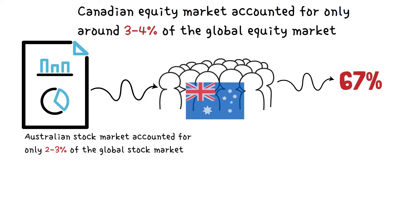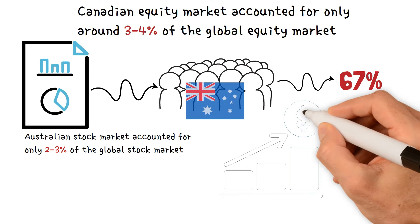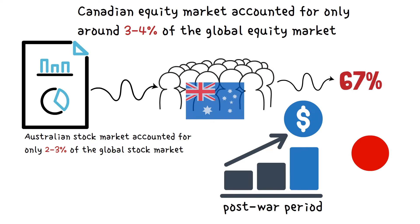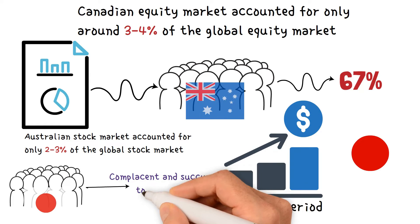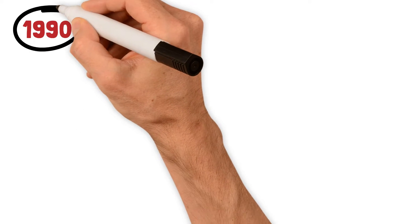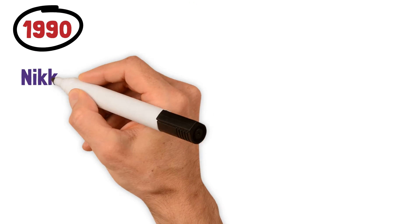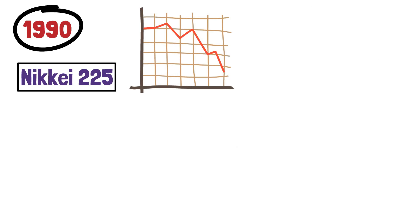Perhaps the most notorious example of home bias comes from Japan. Many years of high returns in the immediate post-war period compelled a significant number of Japanese investors to become complacent and succumb to home bias. This was a mistake because, in 1990, the Japanese benchmark index, the Nikkei 225, plunged by more than 60% and hasn't recovered since.